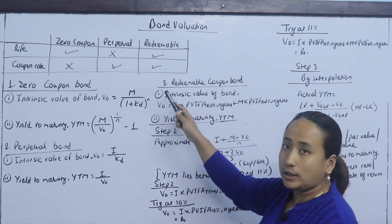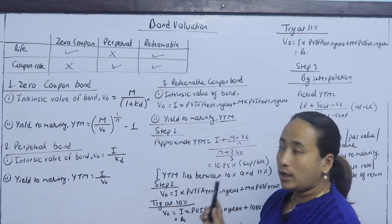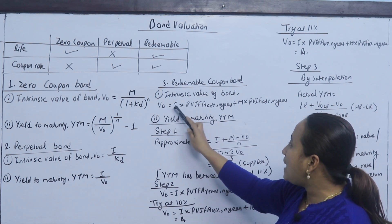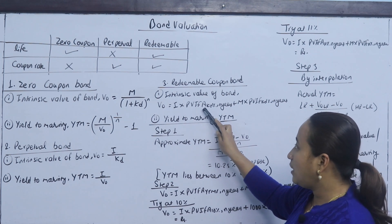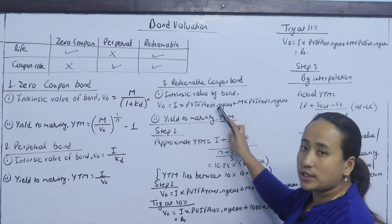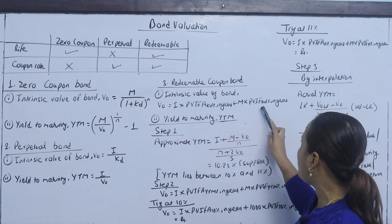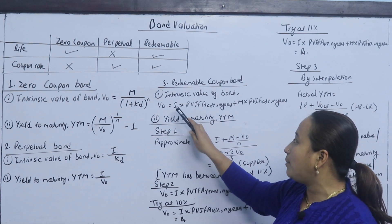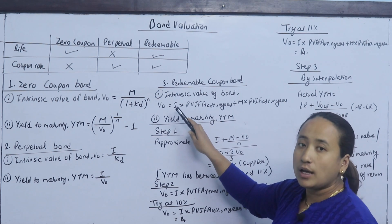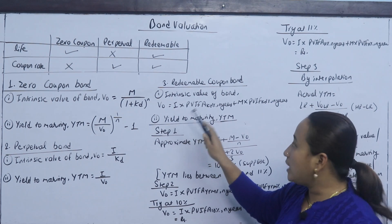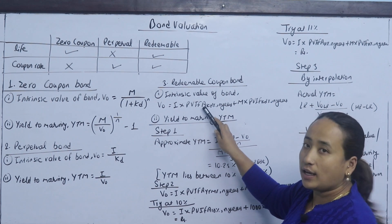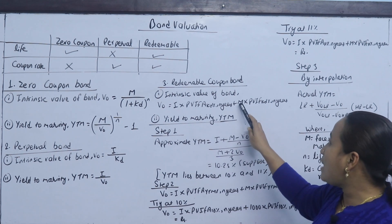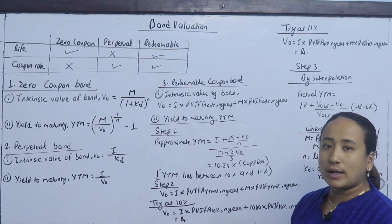For a redeemable coupon bond, the formula for V0 is: V0 equals I multiplied by PVIFA (KD%, n years) plus M multiplied by PVIF (KD%, n years). Here, interest is paid regularly as an annuity using PVIFA, and the par value at maturity uses PVIF.